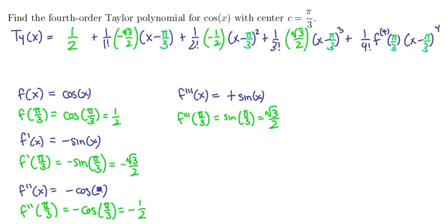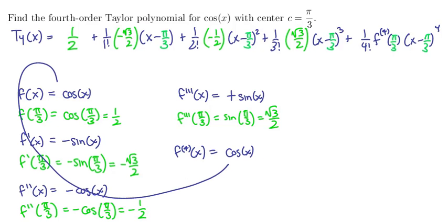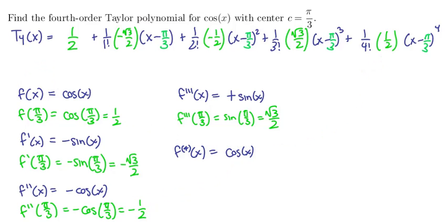Last, the fourth derivative of cosine is cosine again. Evaluating at pi over 3 gives 1 half one more time. So there's our polynomial — let's clean it up.